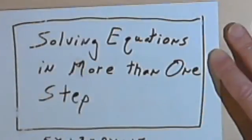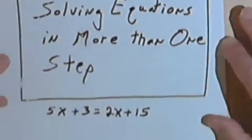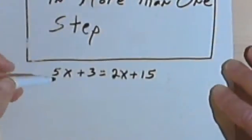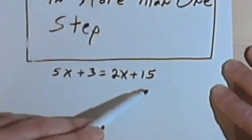This video is going to be about equations that take more than one step in order to solve them. Here's an example. We've got 5x plus 3 equals 2x plus 15.